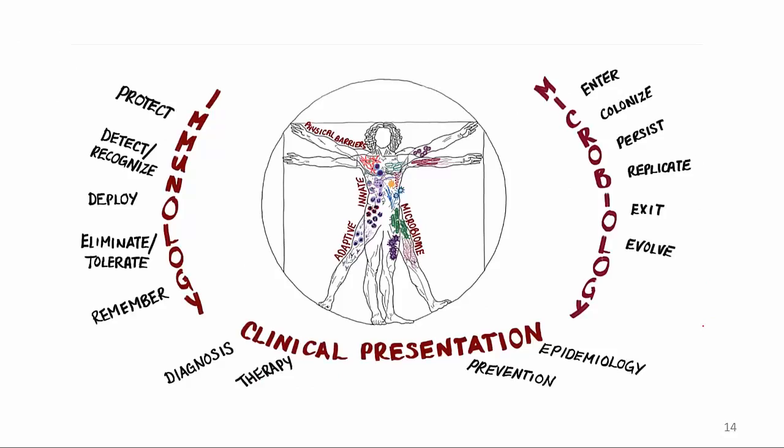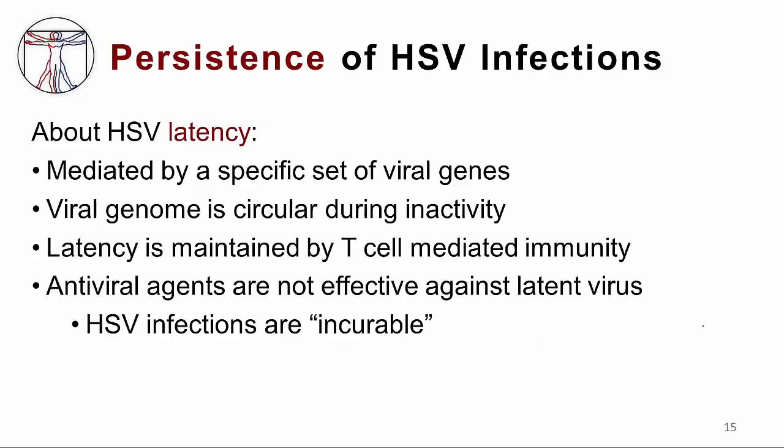The persistence of herpes is in the ganglia to which it was transported in the first place, where it establishes latency. This latency is mediated by a specific set of herpes viral genes. The viral genome becomes circular during this inactivity, and latency is maintained by T-cell mediated immunity. It's important to underscore that antiviral agents are not active against latent herpes virus, so if a person has acquired the virus and it has established latency, the viral infection is incurable.